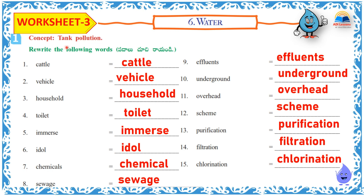Worksheet 3 Concept: Tank Pollution. Rewrite the following words: Cattle, Vehicle, Household, Toilet, Idol, Chemical, Sewage, Effluent, Underground, Overhead, Scheme, Purification, Filtration, Chlorination.